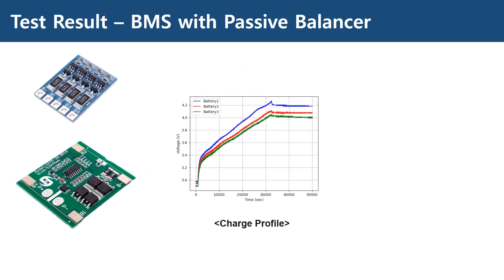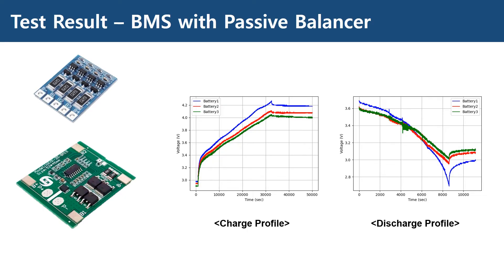The result when using a passive balancer is not very different. As when using only a BMS, the blue line first reaches the limit and charging stops, leaving the other cells below fully charged. The balancing capability of the passive balancer is dependent on the resistance value of the resistor. In this case, the bleeding resistor is 62 ohms, so the current flowing through the resistor is 68 milliamperes. When the charging current for a cell exceeds 68 milliamperes, the voltage of that cell will rise further until the BMS cuts off the charging. For the passive balancer to achieve balancing, the dissipated power should exceed the charging power for a certain cell. It is usually not recommended to use the passive balancer if the capacity of the battery pack is large.